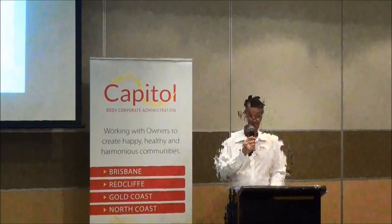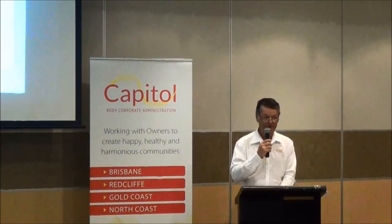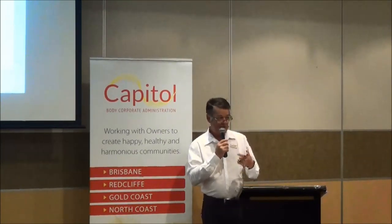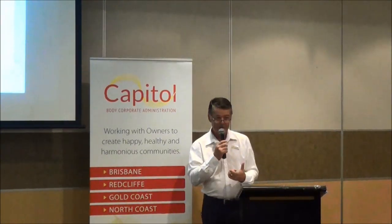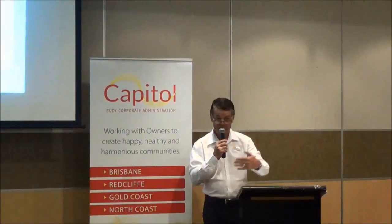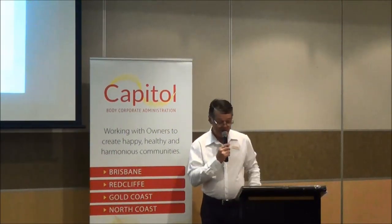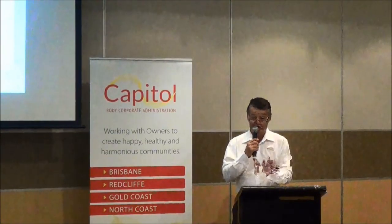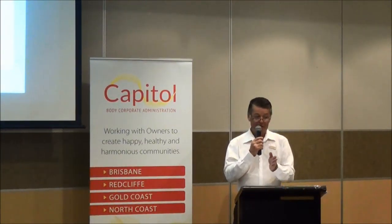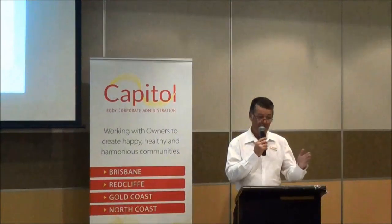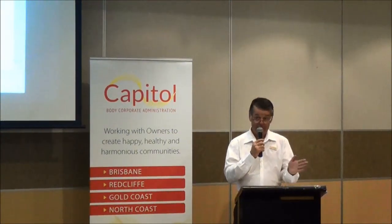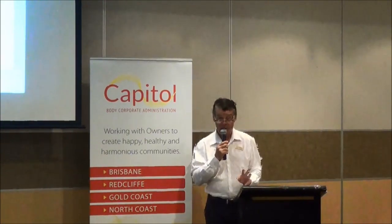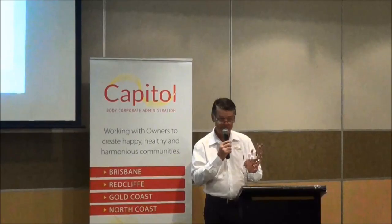Fencing — another interesting one. Do you get questions on fencing? The boundary fence of scheme land is always going to be body corporate. It depends what's on the other side as to whether we go fence-sharing between houses. The fence between two lots is going to be shared by the two owners. The fence that borders a lot and common property will be 50-50 body corporate and the owner. So those are the three golden rules.